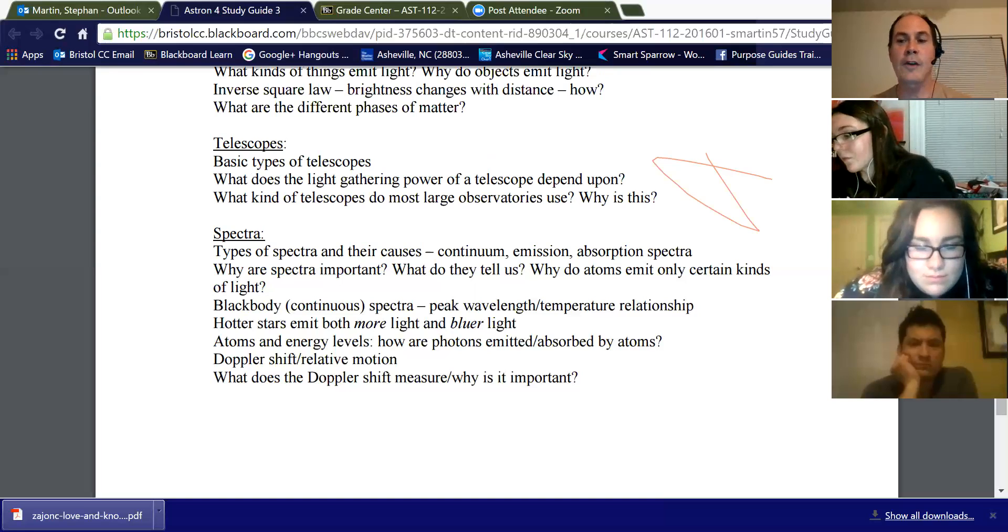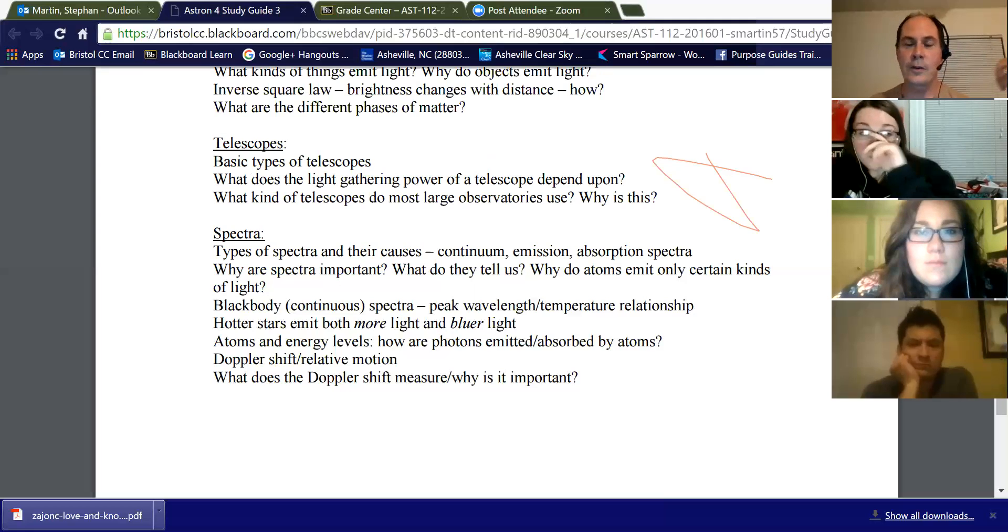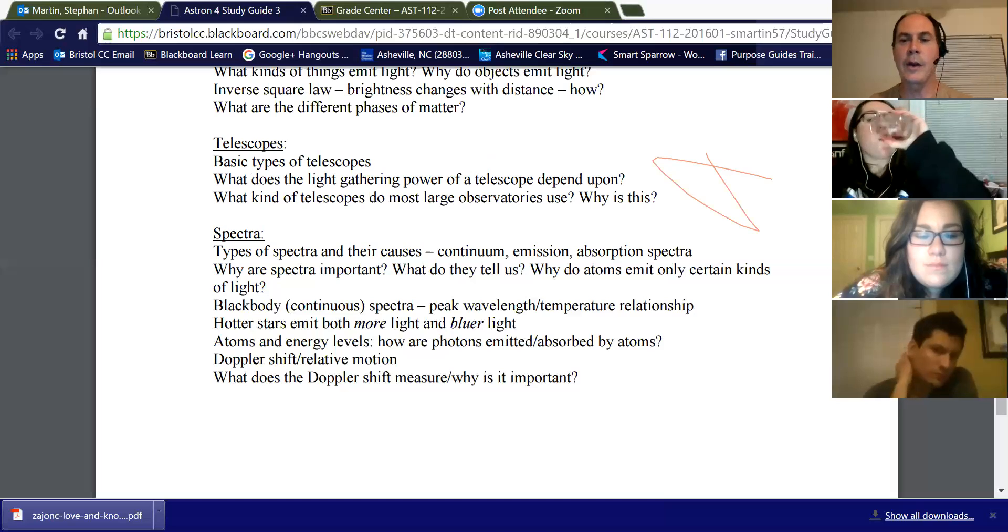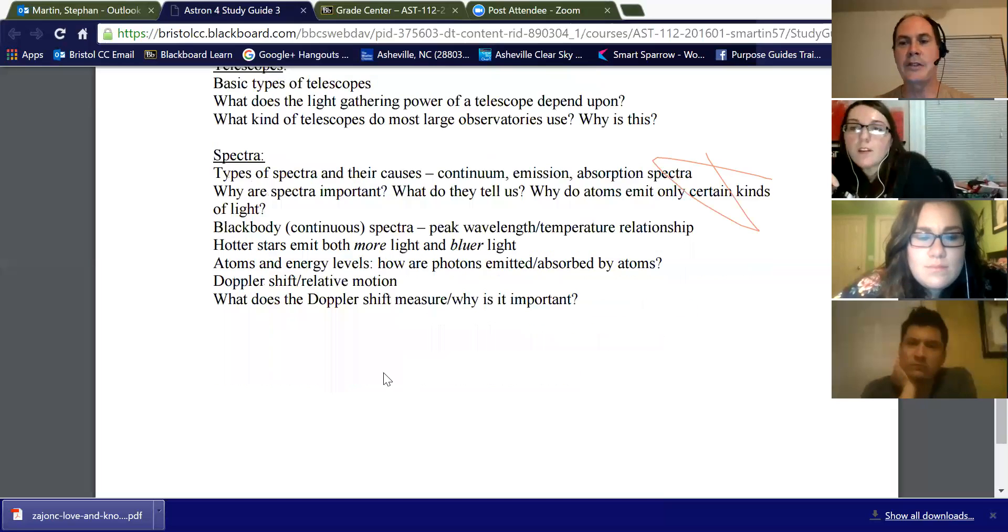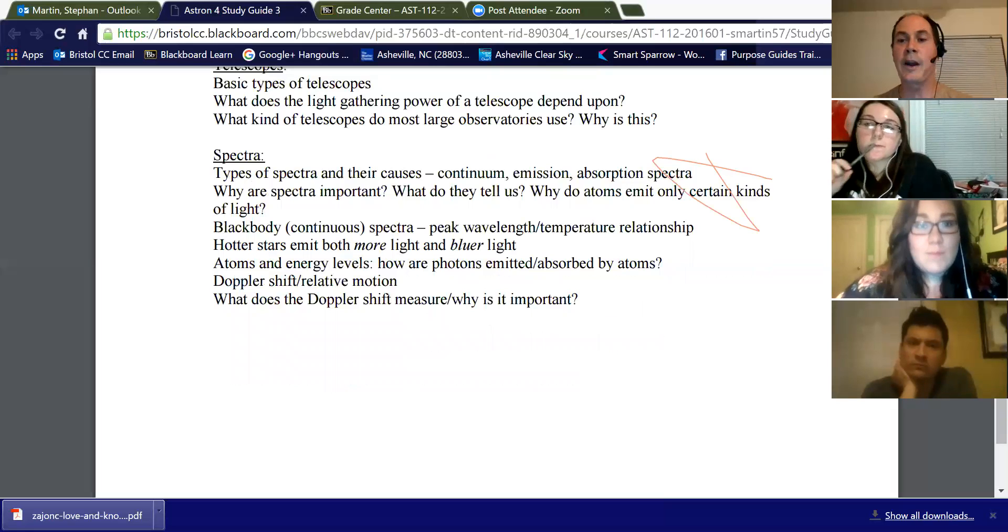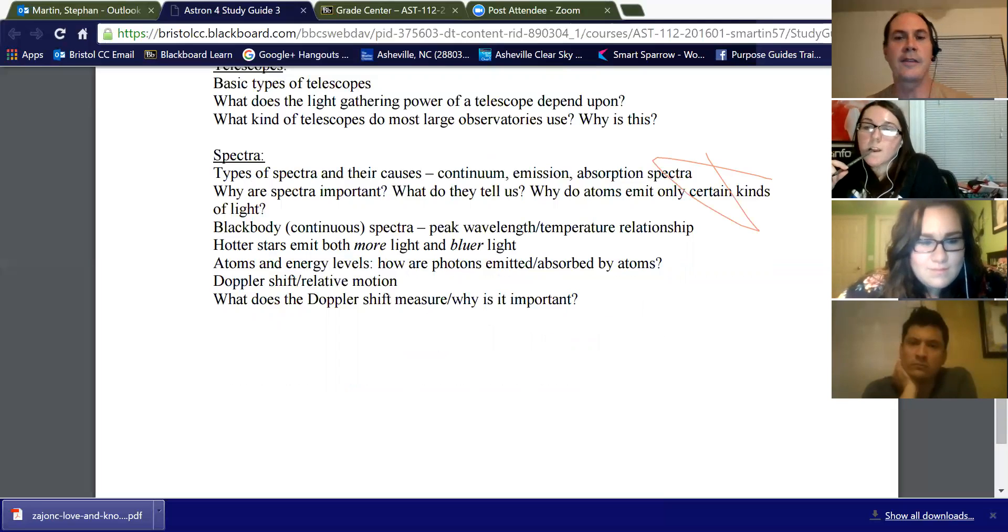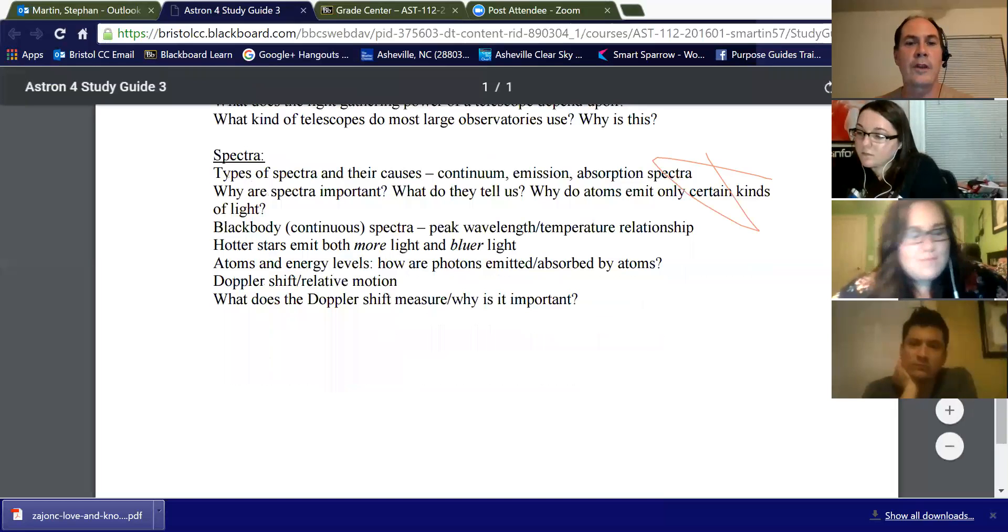All right. So if you ever got a speeding ticket, that's because of Doppler shift. The radar gun that the police have bounces a radio wave off your car. If it's coming towards them, the radio waves will be blue shifted. The radar gun measures that and determines your speed. So Doppler shift has lots of applications on Earth as well. Doppler radar for weather, they're basically bouncing radar waves off clouds and determines the motion that way. But that's what Doppler shift is. It's a shift caused by relative motion.